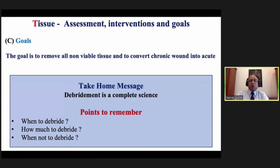Coming to goals: debridement is complete when our goal is to convert a chronic wound into an acute one. Points to remember: know when to debride and when not to debride — and how much to debride. Please do not remove normal tissue present in the surrounding area.